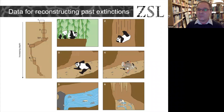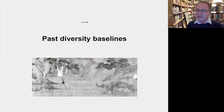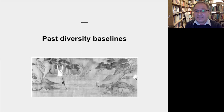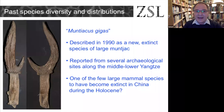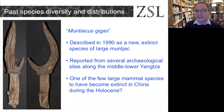At the most basic level, these archives can reconstruct past biodiversity baselines. For example, bones of a very large muntjac — Muntiacus gigas — were described as a new species in 1990 from archaeological sites in the Yangtze Delta, thought to be a locally extinct endemic. But since then, giant muntjacs have been found living in the Annamite Mountains of Vietnam and Laos, and statistical comparison of antlers suggests no difference — indicating a massive range contraction rather than a global extinction.